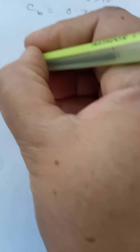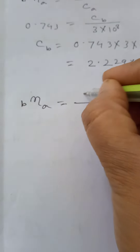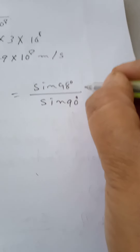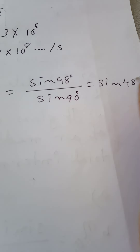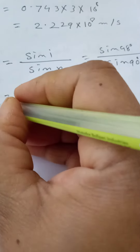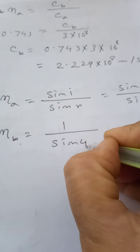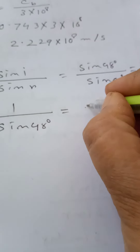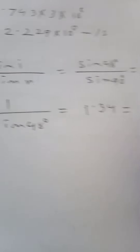To find out, we use bna = sine i / sine r = sine 48° / sine 90°. Since sine 90° = 1, this is just sine 48°. So anb, the refractive index of medium B with respect to medium A, equals 1 / sine 48°, which equals 1.34.